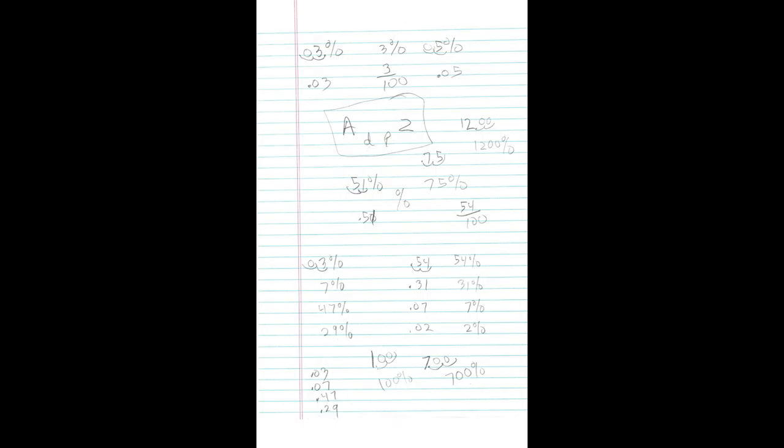Ten can't go into one zero times. So what I did was I added a decimal and a zero. Ten going into ten one time. One time ten is ten. Subtract it, and we're left with zero. So there you see how I converted a fraction back to a decimal.